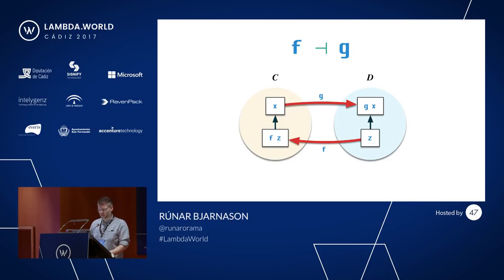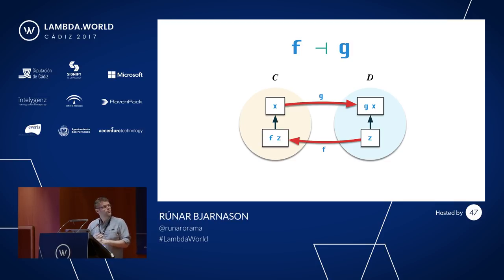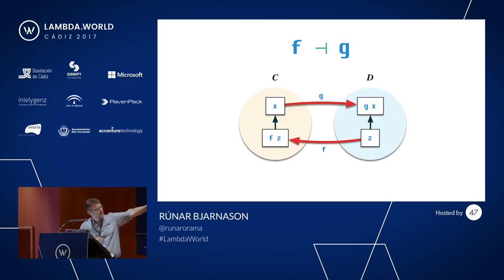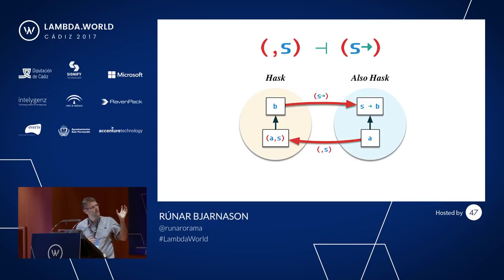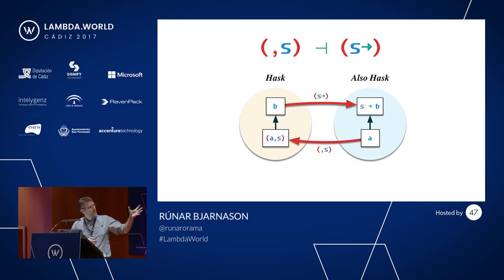The situation is like this: it's a natural isomorphism between arrows in categories. If we have two categories C and D, then the functors F and G form an adjunction — we say that F is left adjoint to G — if there's an isomorphism on the arrows such that there's an arrow from F of Z to X in C exactly when there's an arrow from Z to G of X in D. In the curry/uncurry example, both these categories are the category of Haskell types with Haskell functions as arrows.